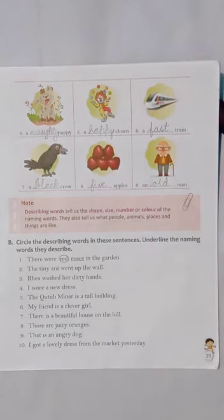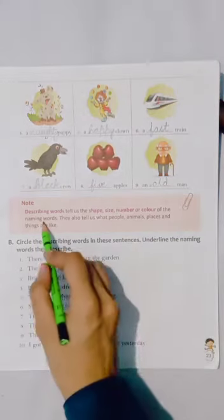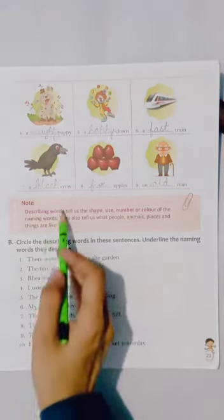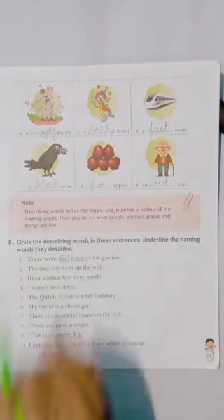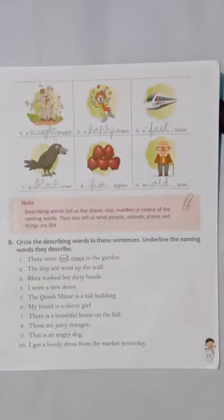Let's revise the definition once again. Words that describe naming words are called describing words. Aise words jo naming words ke baare mein hume batate hain, unko describing words kehte hain. I hope the concept is clear. Thank you.